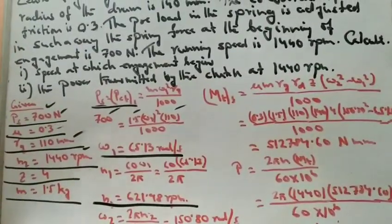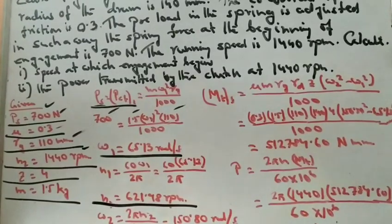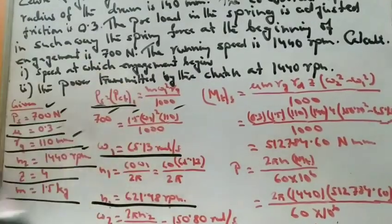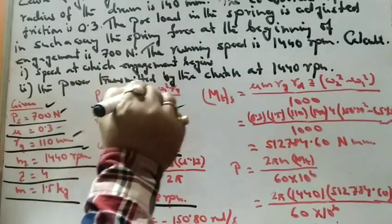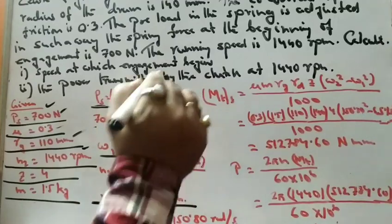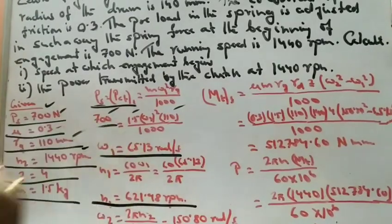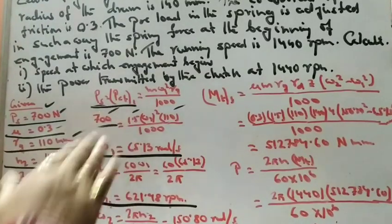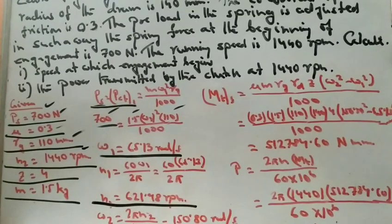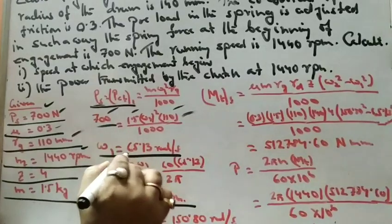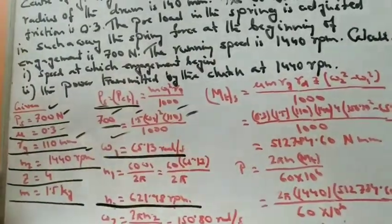At the moment just before engagement, spring force = PCF1 = m * omega1^2 * rg. Setting this equal to 700 Newton, with m = 1.5 kg and rg = 110 mm, we solve for omega1. We get omega1 = 65.13 rad/s. This is the angular speed at which engagement is about to begin.